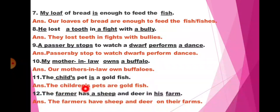Twelfth: The farmer has a sheep and deer in his farm. So here farmer will change into farmers, a sheep will change into sheep, deer will remain deer, and his farm into their farms. The sentence will be: The farmers have sheep and deer on their farms.